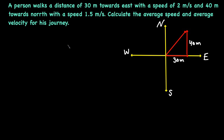Let's start with the third example. A person walks a distance of 30 meters towards east with a speed of 2 meters per second, and then 40 meters towards north at a speed of 1.5 meters per second. We need to calculate the average speed and average velocity for the journey.